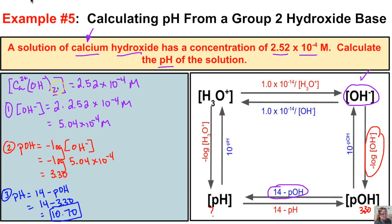Remember: whenever you have a strong base bonded to a group two cation like calcium and you're given the concentration of the entire substance, it will dissociate into two moles of hydroxide ions for every one mole of the compound, so you must multiply the concentration by two before proceeding with the rest of the calculation.